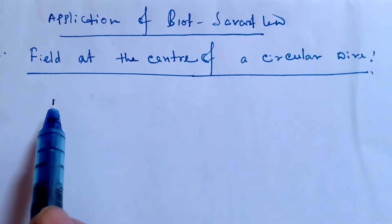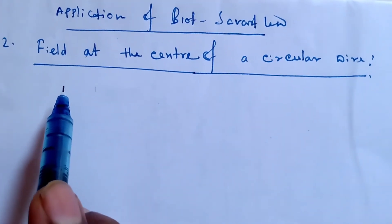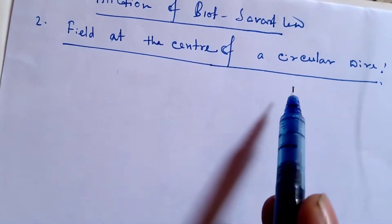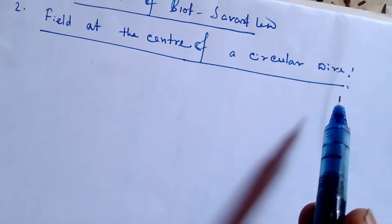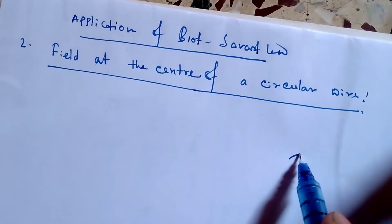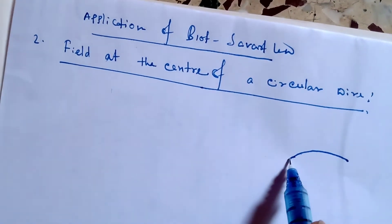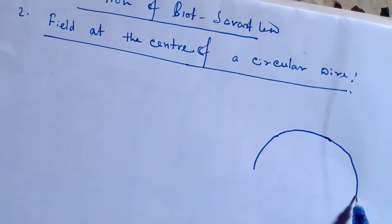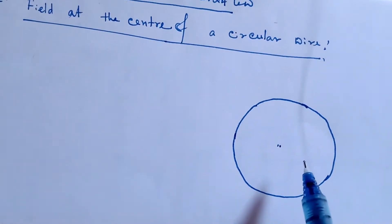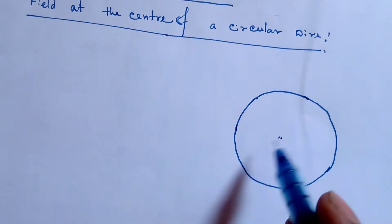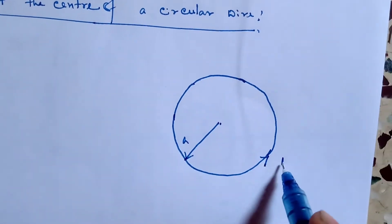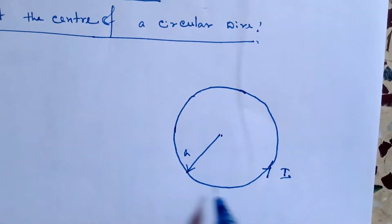In this lecture, we already discussed the application of Biot-Savart law for a long straight-line current in a conductor. Today, I will find out the field at the center of a circular coil by using Biot-Savart law. For this, we have to choose a circular wire having radius A, with current going through this wire in this direction.